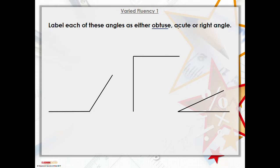as either obtuse, acute, or a right angle. The easiest one I would say is definitely the right angle where you can see the two lines in the middle meet together to create a 90 degree angle, a right angle.